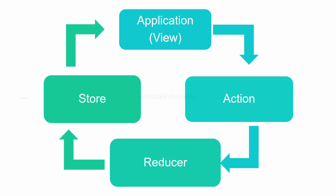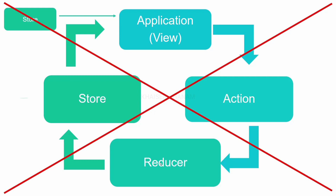In Redux, we have only one store for the entire application — we cannot have multiple stores. If you create one more store, that becomes a separate application. We can have multiple reducers and multiple actions — for example, actions to increase or decrease quantity — but the store can only be one. Always remember: there is only one store in Redux.